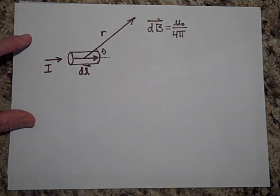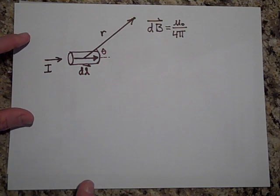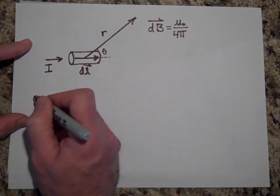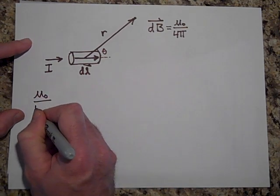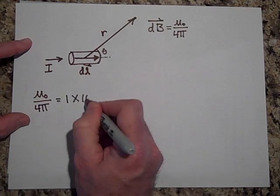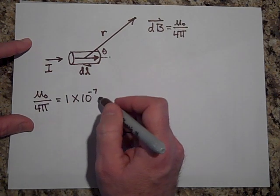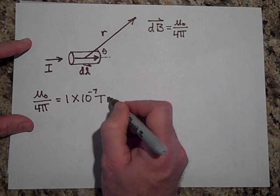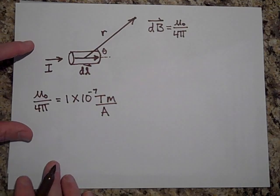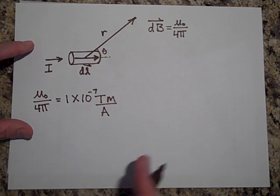and the units on that are Tesla's meters over amps. So I'll write that here, mu naught over 4 pi, that's going to be 1 times 10 to the negative 7th, and the units on that is Tesla's meters over amps, and you'll see why that has to be Tesla's meters over amps in a little bit, a different video actually.